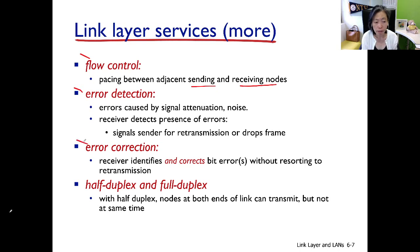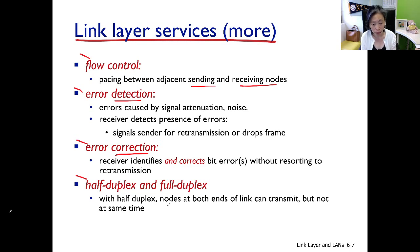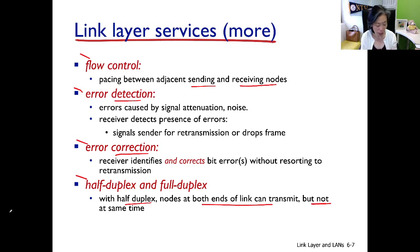The fourth and fifth functions are related: one is to detect errors, the other is to further correct errors. For certain links you definitely want error detection, and for others you might want error correction. Last is half duplex and full duplex, which relates to how bits are modulated on the link. For a half duplex link, nodes can send in both directions but not at the same time. For a full duplex link, data can be sent in either direction simultaneously.